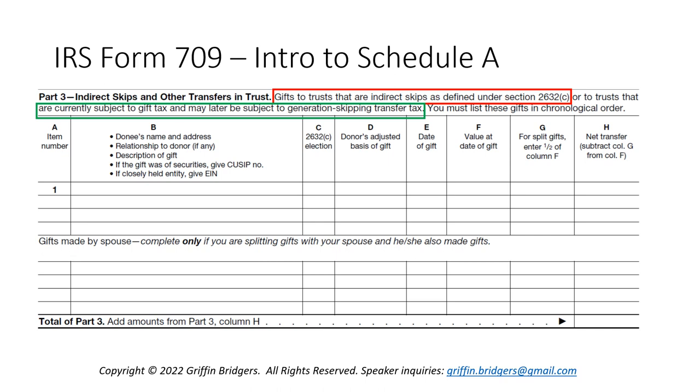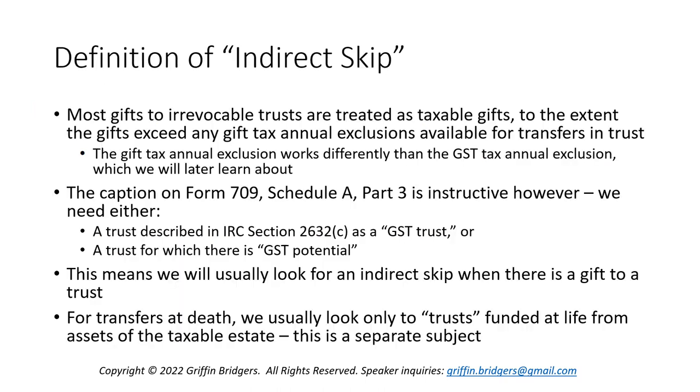We see here on Part 3 of Schedule A, the heading is 'Indirect Skips and Other Transfers in Trusts,' which gives us a hint as to where we're going. We're going to look at a couple of items: one is a gift to a trust that is an indirect skip as defined under code section 2632, or a trust that is currently subject to gift tax and may later be subject to generation skipping transfer tax. So that tees things up for us to look at an indirect skip.